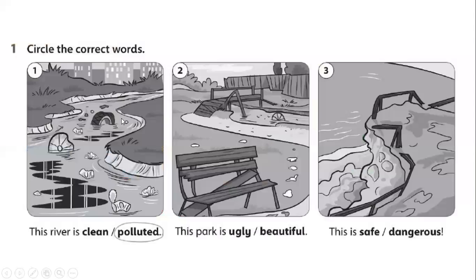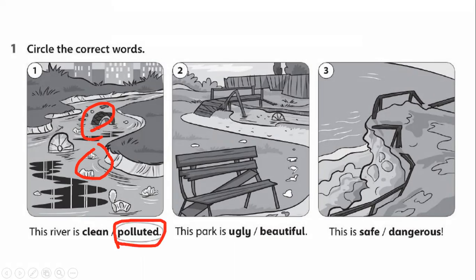Now let us move to exercise one. In the first picture we have a river — what do we have in this river? There is a lot of garbage, so the water here is polluted. The river is polluted. In number two, something is broken here, so the area is ugly. The park is ugly.